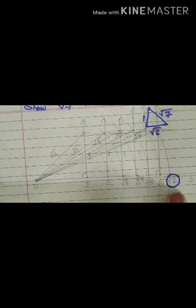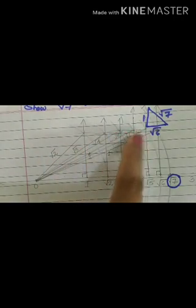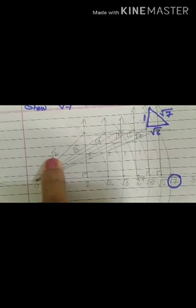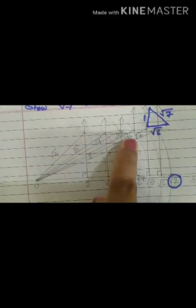To get √7, we did √2, √3, √4, √5, √6, and then we got √7. Starting from √2 to get √7 gives you a complete revision of irrational numbers: √2, √3, √4, √5, √6, √7 — these are all irrational numbers.